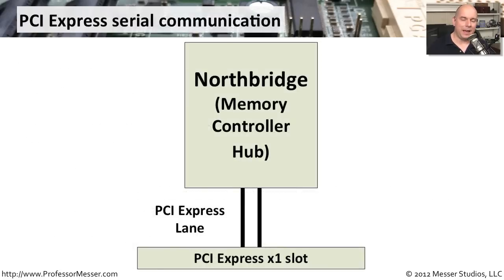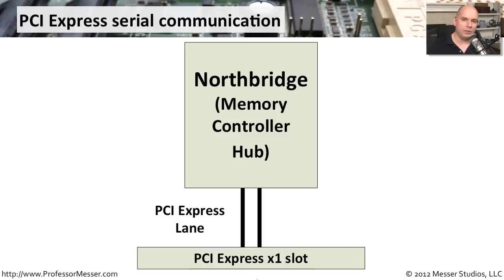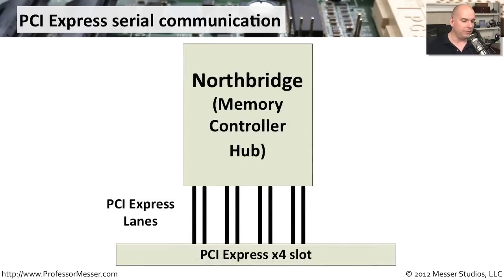PCI Express doesn't have all those separate wires in a parallel communication — it simply has a single lane. A PCI Express x1 slot has a connection up to the north bridge with another lane on the way back, so it's a full duplex communication. If we need more throughput, we can simply plug into a slot that has more lanes of communication — so a by-4 slot has four of those full duplex lanes between the interface card and the north bridge.